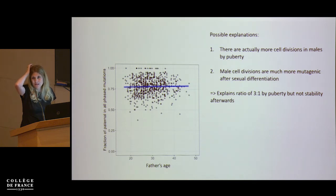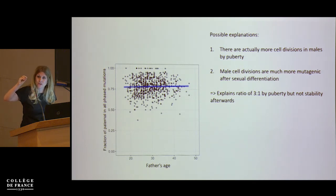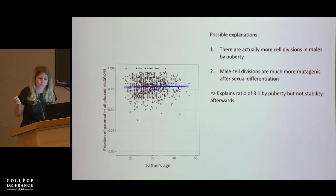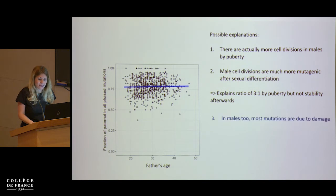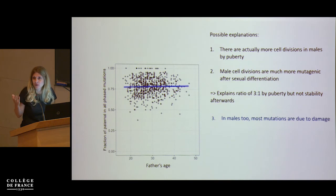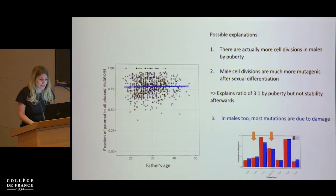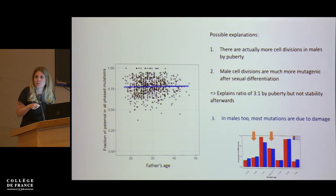They only explain the stability afterwards under really contorted conditions where per-cell-division mutation rates and cell division rates mysteriously balance out — mathematically possible, but a strong case of special pleading. So what we think is going on instead is that in males too, most mutations are actually due to damage. They have the same source, and that's why their mutation spectra are so similar.